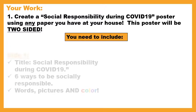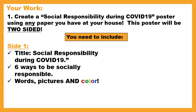On side one, the title is 'Social Responsibility During COVID-19' — everyone is going to have the same title. You're going to list six ways to be socially responsible, and that's a list so you don't need complete sentences. You do need words, pictures, and color on your poster.